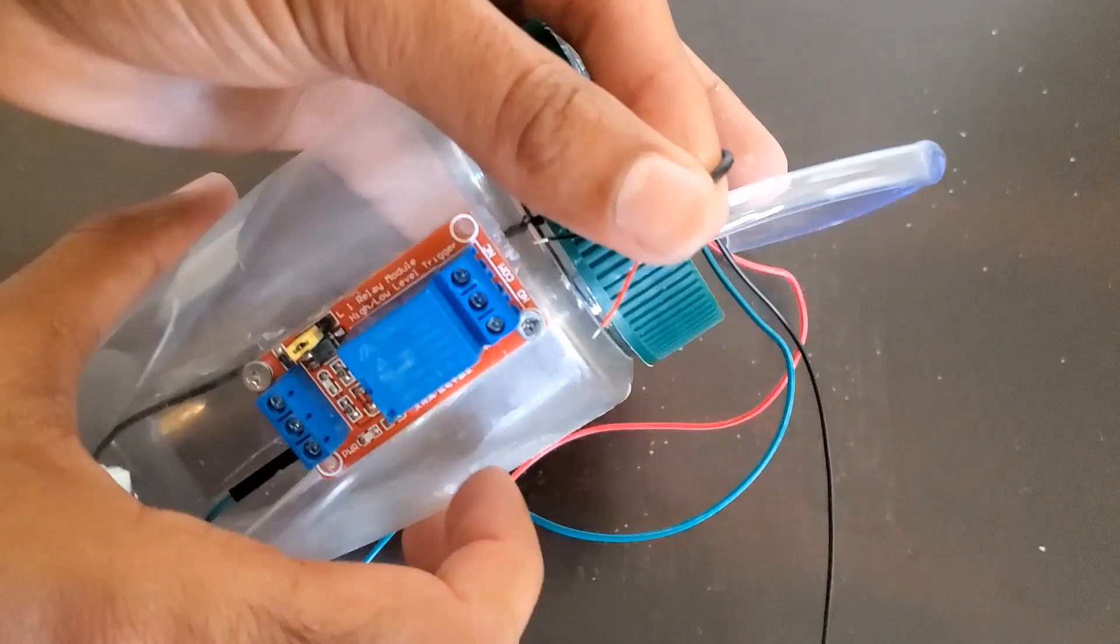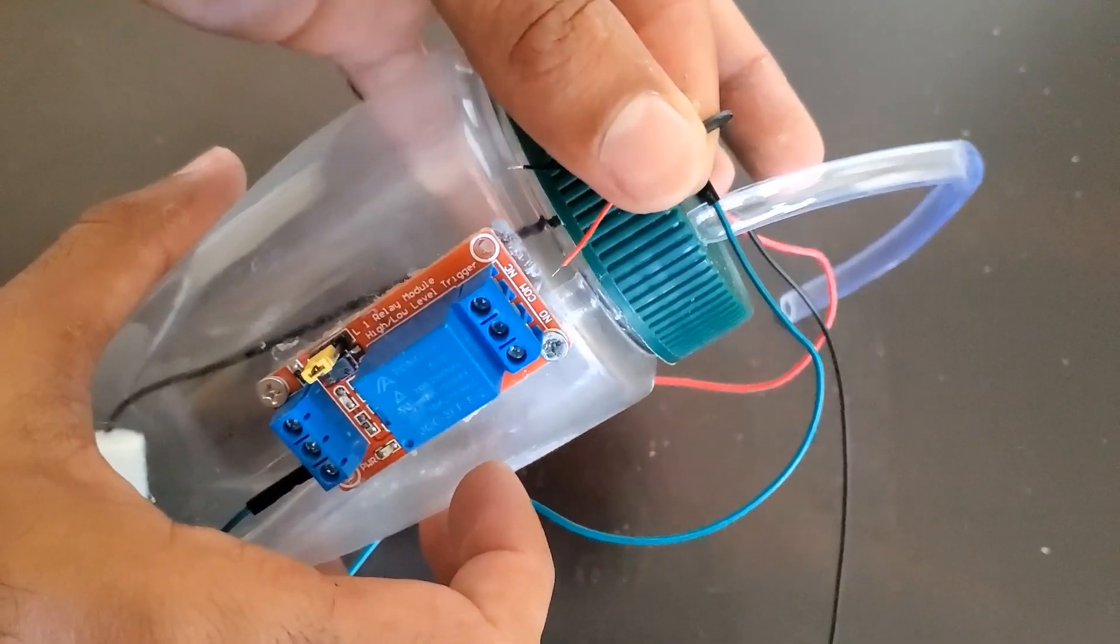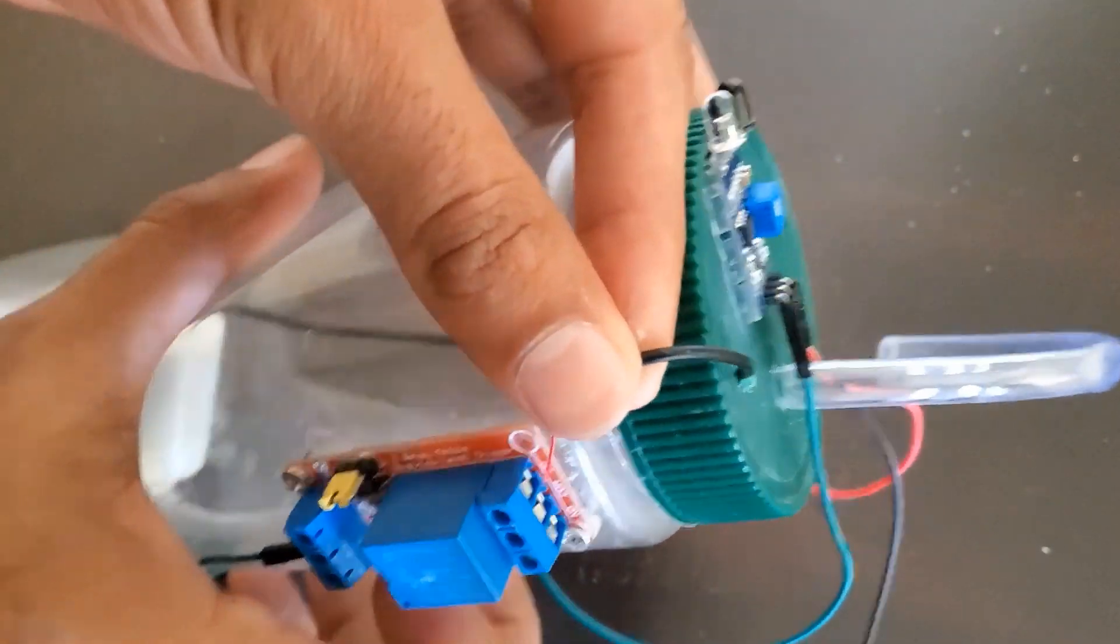Next, we need to take the red positive wire from the pump and wire it to the normally open terminal on the relay.